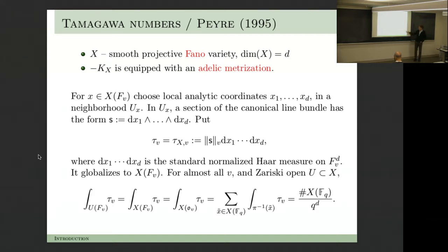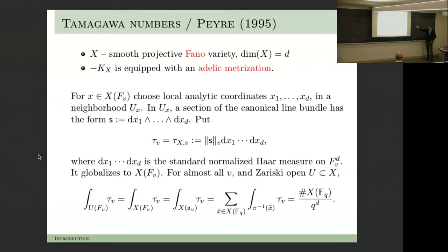You also see why you need the final condition. If there is no H¹—you're using Weil conjectures here—then you can regularize by H², which is the Picard lattice. And then it just works better.